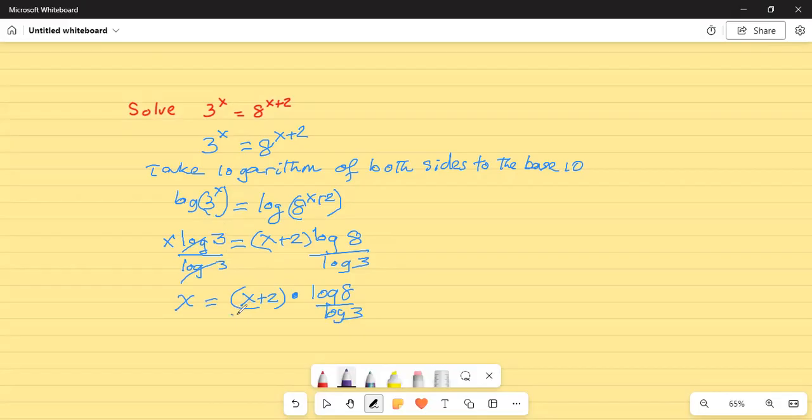So, logarithm of 3 in the numerator, logarithm of 3 in the numerator, these two terms will cancel. So, we will have x is equal to x plus 2 times logarithm of 8 divided by logarithm of 3.